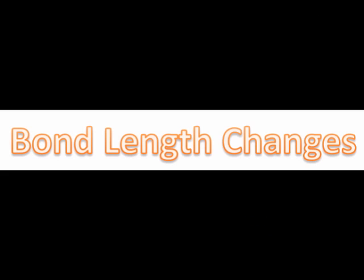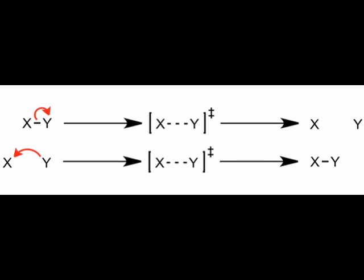Where a bond is breaking as an elementary step proceeds, we can imagine the distance between the two atoms lengthening. Thus, in the transition state, we would draw these two atoms at a larger distance than they are in the reactant, but still partially connected through a dotted bond.